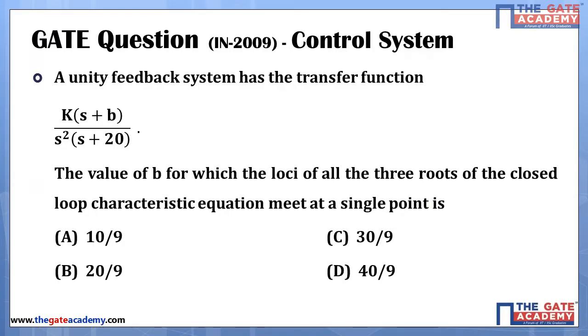Look at the question in the slide: A unity feedback system has the transfer function K times s plus B divided by s square s plus 20. The value of B for which the loci of all the three roots of the closed loop characteristic equation will meet at a single point is...